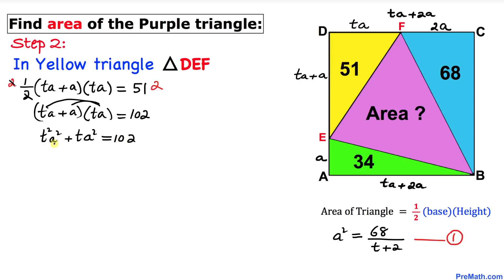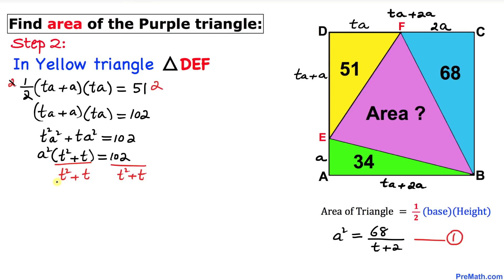Factoring out a squared: a squared times (t² + t) equals 102. Dividing both sides by (t² + t), we get a squared equals 102 divided by (t² + t). Let's call this Equation 2.